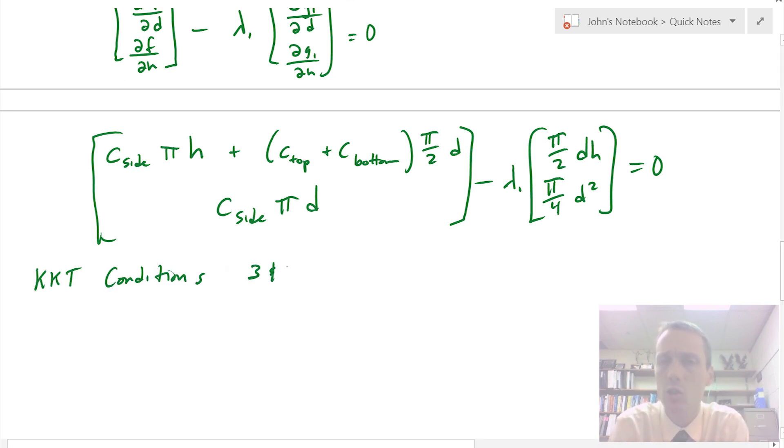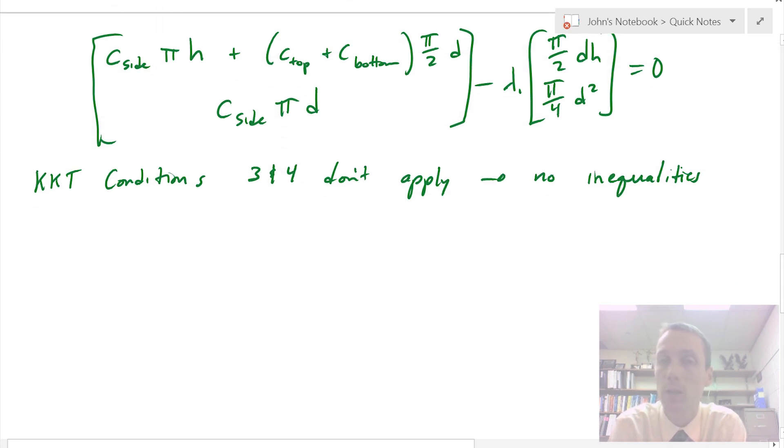The KKT conditions 3 and 4 don't apply in this case because we only have equality constraints. We have no inequality constraints, so we don't have to check these conditions.